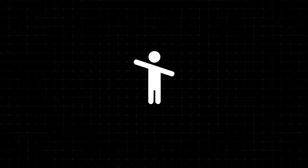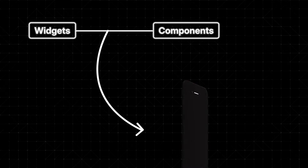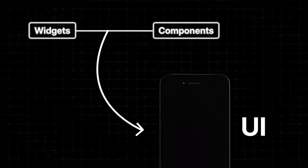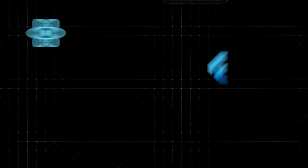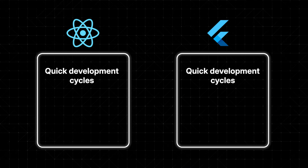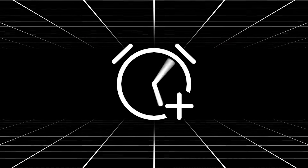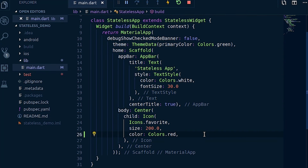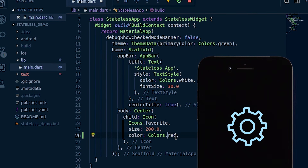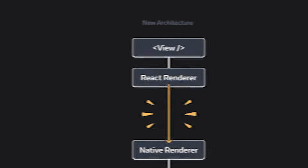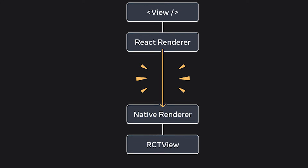This modular setup encourages code reuse, easy maintenance, and a more organized development process. Developers can whip up custom components and widgets, and mix them together to create complex and dynamic user interfaces. Another common trait is their emphasis on quick development cycles. Flutter's hot reload lets developers see changes in real time without needing to restart the app. React Native has fast refresh, which offers a similar experience — features that cut down on development time and make debugging smoother.